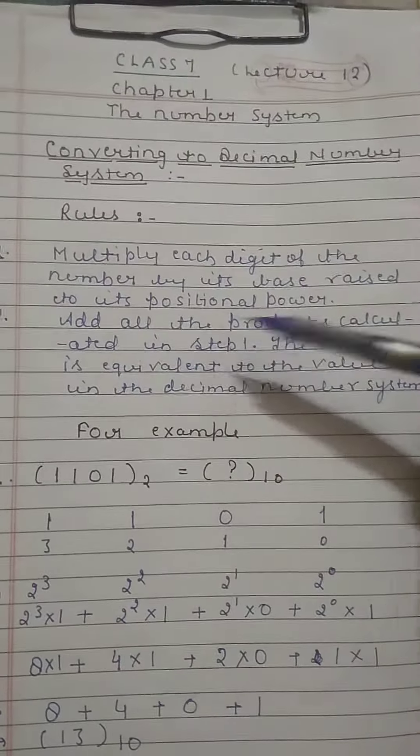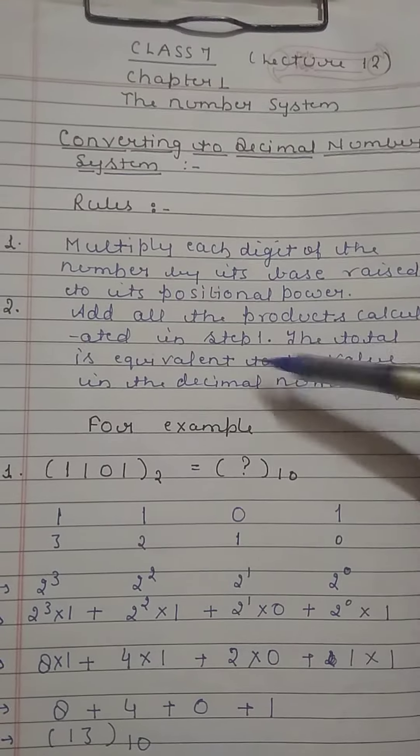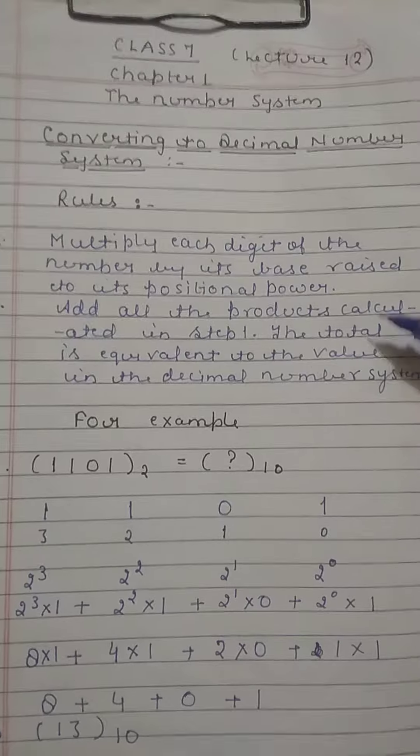Second, add all the products calculated in step 1. The total is equivalent to the value in the decimal number system.